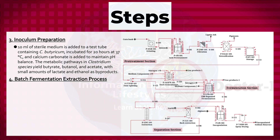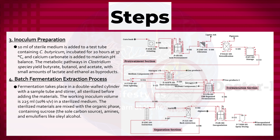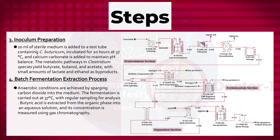Fourth, batch fermentation extraction process: fermentation takes place in a double-walled cylinder with a sample tube and stirrer, all sterilized before adding the materials. The working inoculum volume is 225 milliliters (10% v/v) in a sterilized medium. The sterilized materials are mixed with the organic phase containing sucrose as the sole carbon source, amines, and emulsifiers like oleyl alcohol. Anaerobic conditions are achieved by sparging carbon dioxide into the medium. Fermentation is carried out at 37 degrees Celsius with regular sampling for analysis. Butyric acid is extracted from the organic phase into an aqueous solution, and its concentration is measured using gas chromatography.